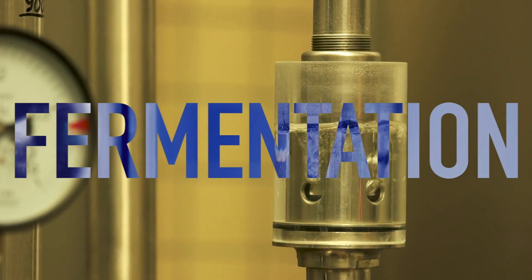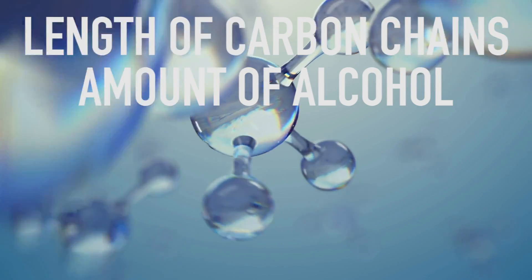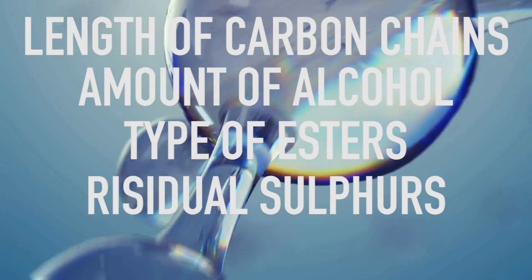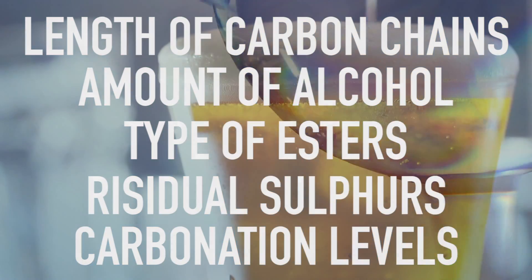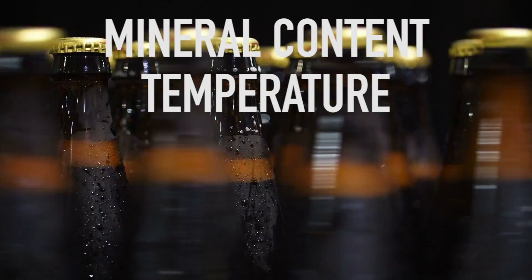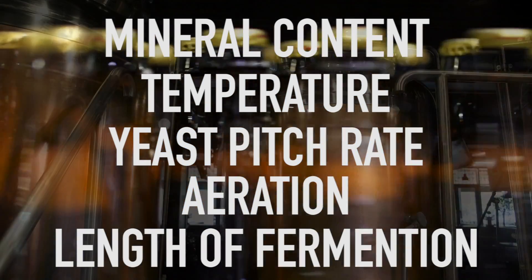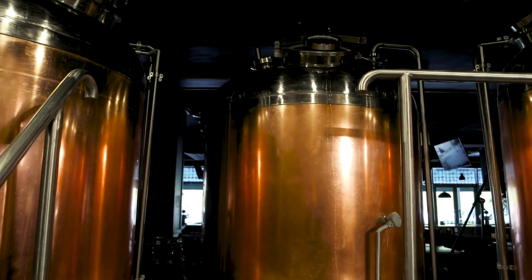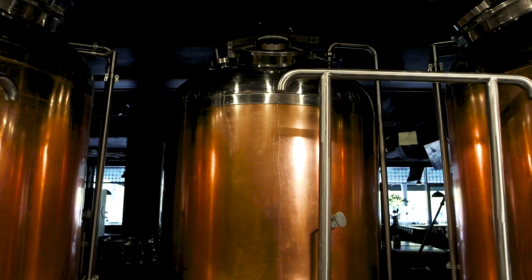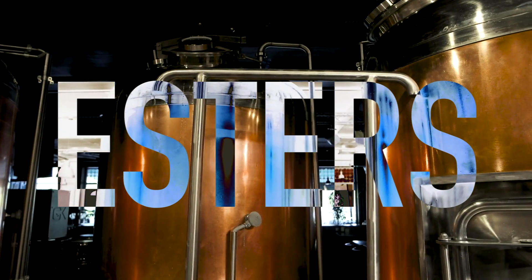During the fermentation process, certain molecules can have different effects on the final flavor and feel of a beer. The length of carbon chains in alcohols, the amount of alcohol, the type of esters, residual sulfurs, and carbonation levels all contribute to the final flavor profile of the beer. Factors that can influence the fermentation and alcohol content of a beer are mineral content, temperature, pitch rate of the yeast, aeration, and length of the fermentation process. Brewers closely control all of these variables to get the flavors they want out of the final brew. Esters produced in the fermentation process can be predicted and controlled to produce certain flavors as well.